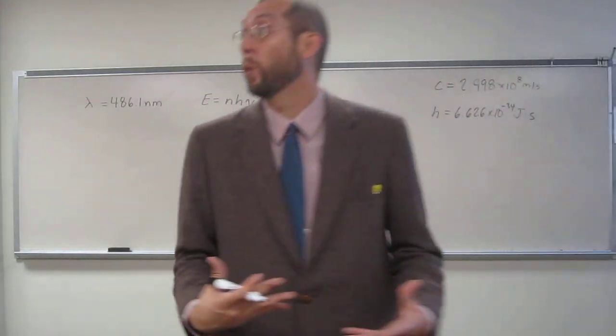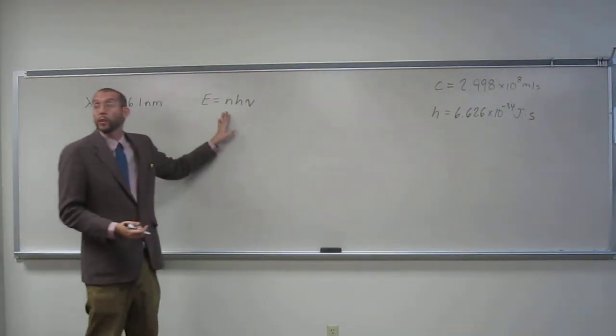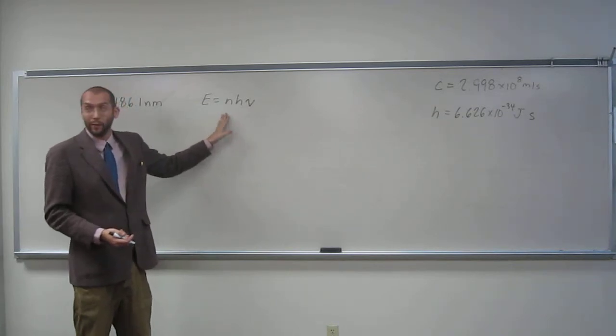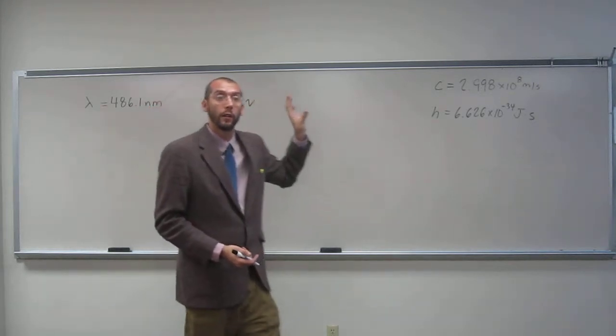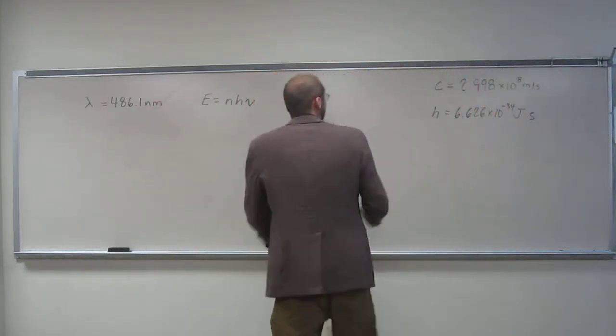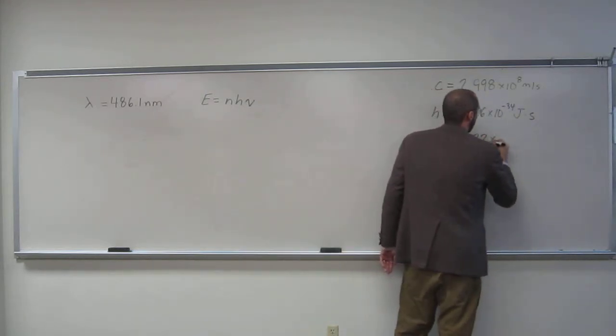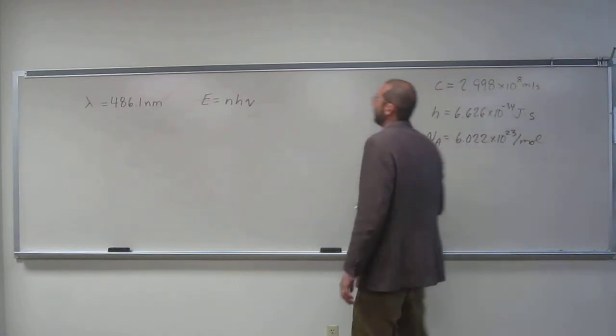So the first one, since it says one photon, n is going to equal one. The second one, it said a mole of photons, so n is going to equal 6.022 times 10 to the 23rd. So let's just write that down.